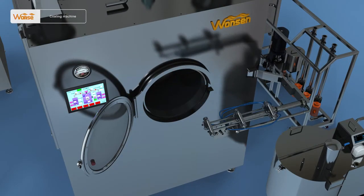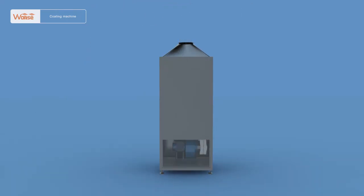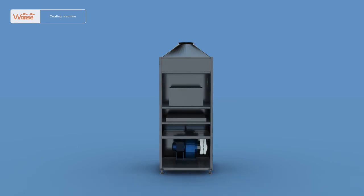The hot air system is mainly composed of the cabinet, centrifugal fan, primary efficiency filter, medium efficiency filter, heat exchanger, and high temperature resistant high efficiency filter.